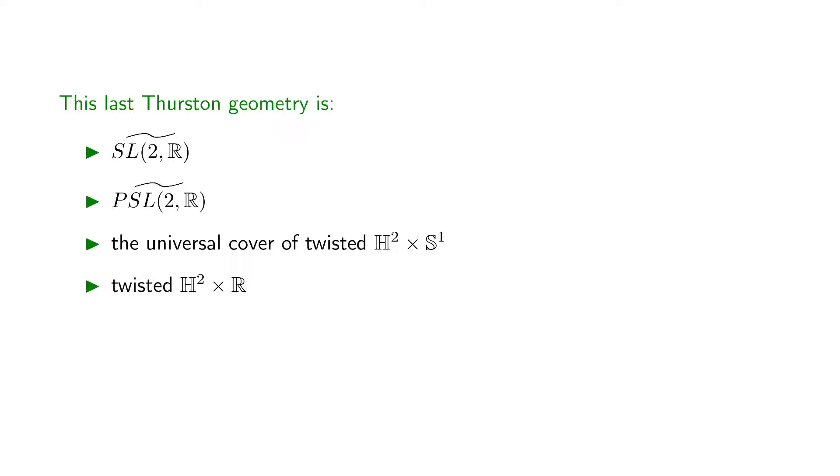So, we have explained the last Thurston geometry. Is this the end of this series about non-Euclidean geometry visualization? No.